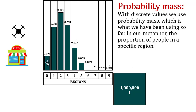In region 0 here, the proportion is 0.075, so that's the probability. In our metaphor, what's the probability that the first drone will land in this area? It is 0.075. What's the probability that the drone will land in region number 2? It is 0.3, and so on.